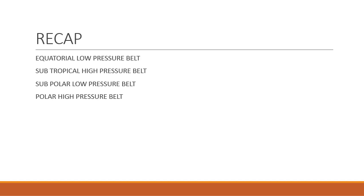The second belt is the subtropical high pressure belt, which lies between 30 to 35 degree north and south of the equator. This belt has high pressure mainly because of the sinking of the air. Then we studied about the subpolar low pressure belt or the circumpolar low pressure belt, which lies between 60 to 70 degree north and south of the equator. And lastly, we had studied about the polar high pressure belt, which lies between 80 to 90 degree north and south of the equator, which is caused because of the extremely low temperature.